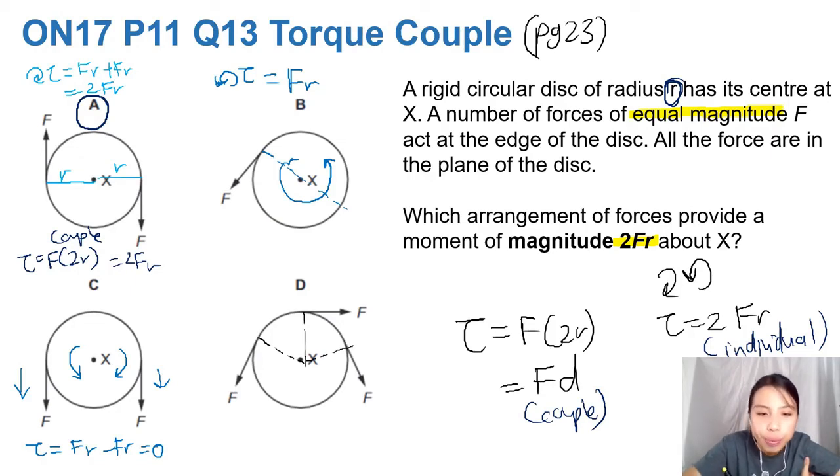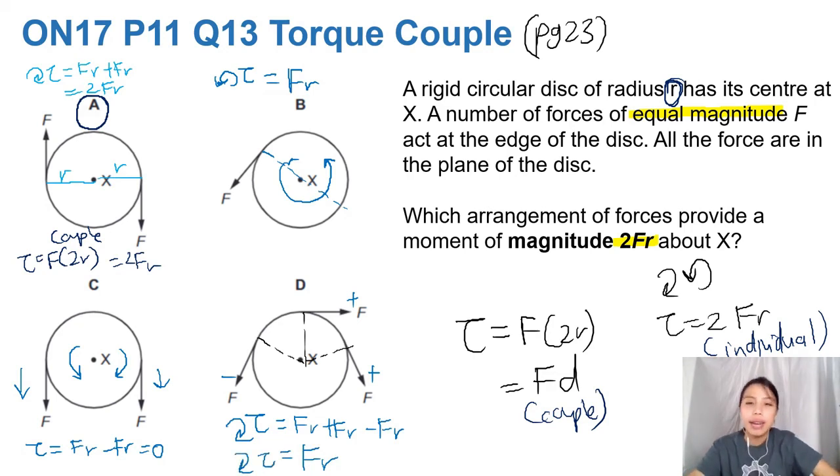For that one, torque will be - there's more going clockwise, so let's say clockwise is positive. So this is positive, positive, and this will be negative. So you have Fr plus Fr minus Fr, and you get Fr in the end. That's different direction to B since this one is clockwise.